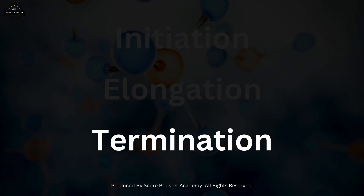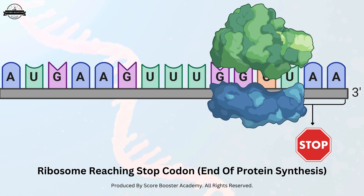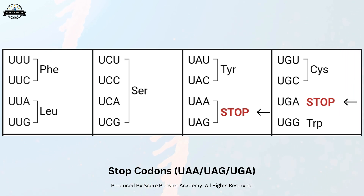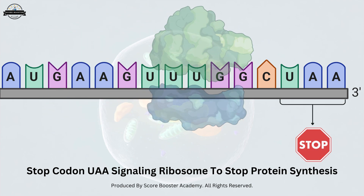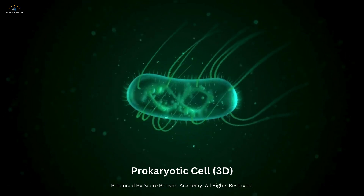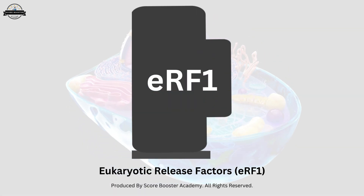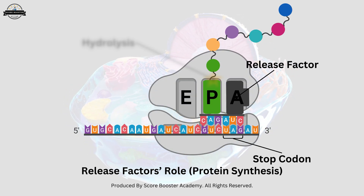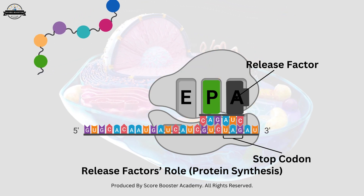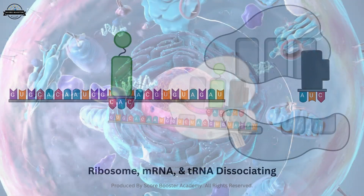Finally, we have the termination phase. Termination is the final stage of translation, where the ribosome reaches a stop codon on the mRNA. There are three stop codons: UAA, UAG, and UGA. These stop codons do not code for any amino acids but signal the ribosome to stop protein synthesis. When a stop codon enters the A-site, release factors bind to the ribosome. In prokaryotes, release factors RF1 and RF2 recognize the stop codons, while in eukaryotes, the release factor eRF1 performs this function. These release factors promote the hydrolysis of the bond between the polypeptide chain and the tRNA in the P-site, releasing the newly synthesized protein. Following this, the ribosome, mRNA, and tRNA dissociate and are recycled within the cell.